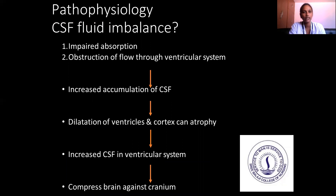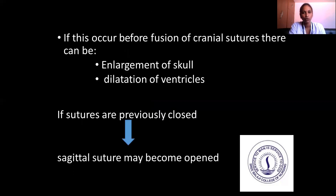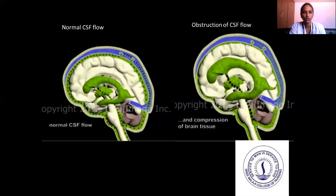In pathophysiology: impaired absorption of CSF may lead to obstruction of flow through the ventricular system, causing increasing accumulation of CSF, leading to dilation of ventricles and cortical atrophy. The increase in CSF in the ventricular system compresses the brain against the cranium. If this occurs before fusion of cranial sutures, there is enlargement of the skull and dilation of ventricles. If sutures were previously closed, the sagittal suture may reopen. This diagram shows normal CSF flow compared to obstructed CSF flow and the expanded ventricles in hydrocephalus.